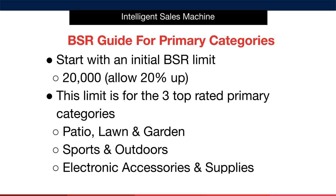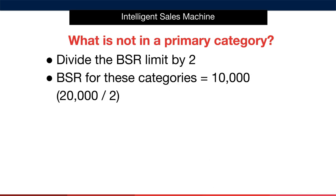You may wonder what happens if your item is not located in a primary category. Here's what to do: we take the initial BSR base number of 20,000 and simply divide that by two, giving us a new BSR limit for non-primary categories. We haven't dealt with the impact of the country you're researching in yet, but we'll do that right now.